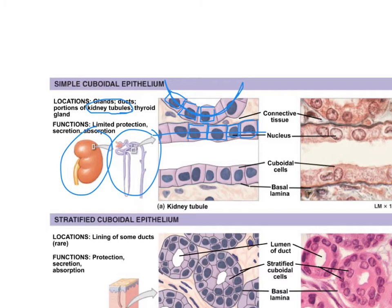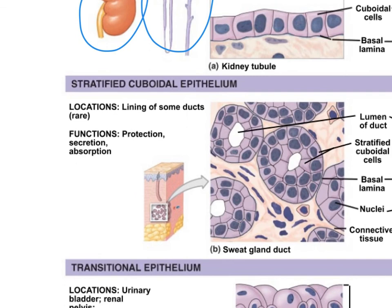Stratified cuboidal epithelium is relatively rare. Looking at the tissue, it lines a duct — the lumen of the duct would be filled with some type of secretion. We can see multiple layers surrounding it, and at the cells closest to the apical surface they look more square, confirming it is stratified cuboidal — multiple layers with cuboidal-shaped cells.